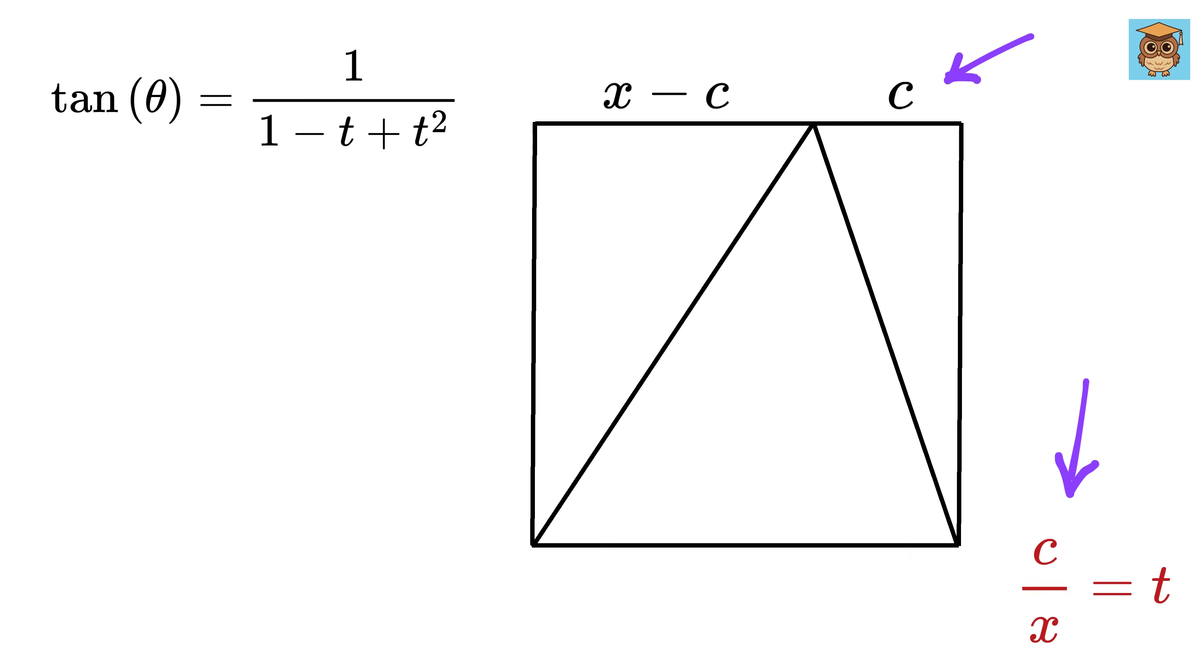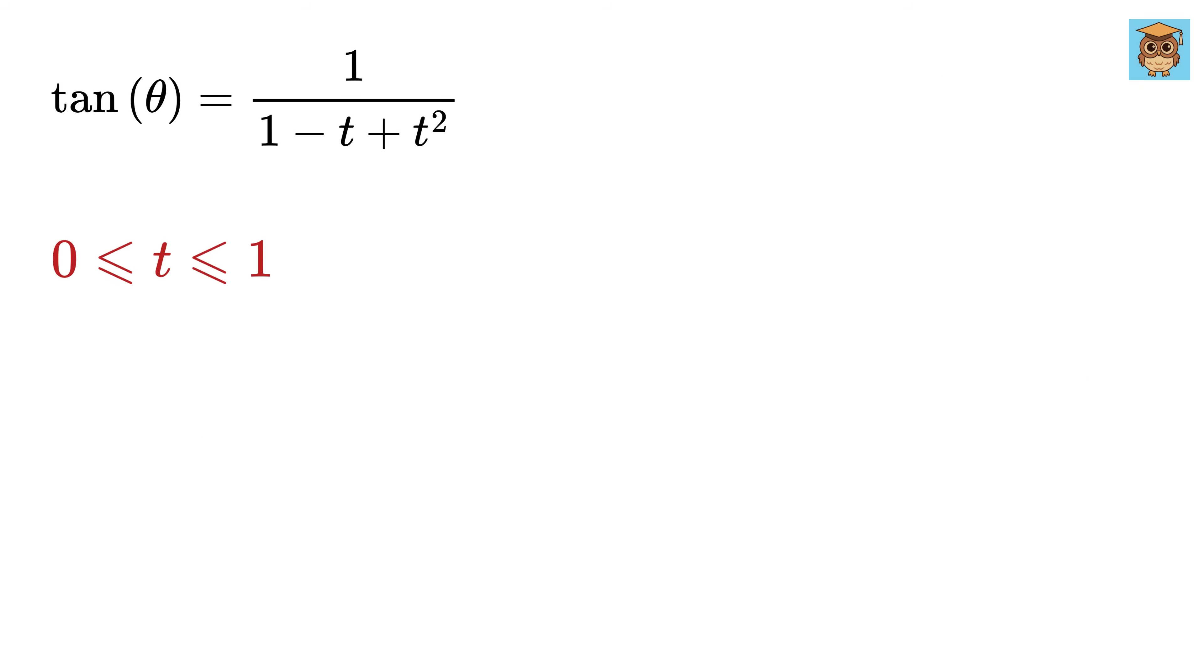Also note that c will be greater than or equal to 0, but it will be less than or equal to x. So c over x, or t, is greater than 0 and less than 1. So now all we need to do is find the minimum and maximum value of this expression and finally take tan inverse of that to get the range of theta.